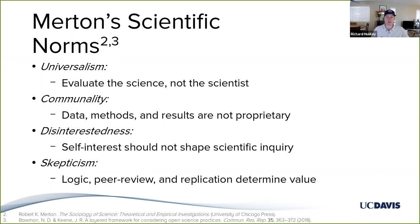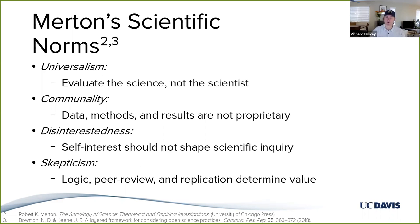Universalism — evaluate the science, not the scientist. Communality — data, methods, and results of science are not belonging to any one individual, but instead they're community goods. The third, disinterestedness — self-interest should not shape scientific inquiry. And lastly, skepticism: logic, peer review, replication. These are the tools of the scientific enterprise.